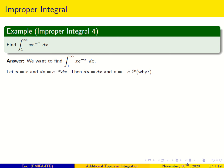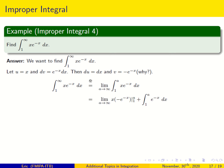Then du equals dx. For v, the antiderivative of e to the minus x dx is minus e to the minus x. To verify: the derivative of minus e to the minus x is minus e to the minus x times minus 1, which equals e to the minus x. Correct. So applying integration by parts: uv evaluated at 1 and a, minus the integral of v du, but since v is negative, the sign flips to positive.